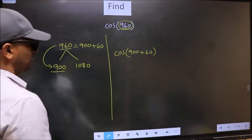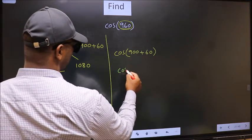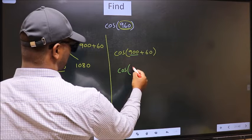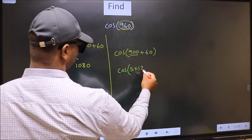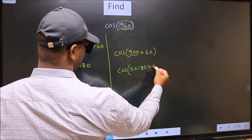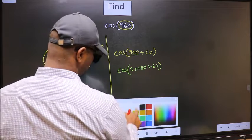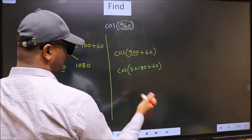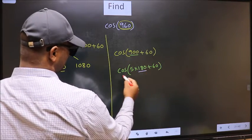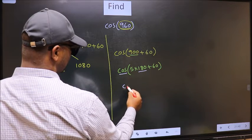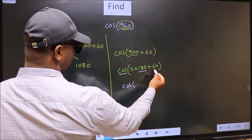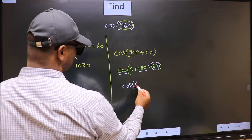Next, cos. In place of 900, now we should write 5 into 180 plus 60. Next, here we have 180, so cos is not going to change. It will remain cos. And inside, we get this angle, 60.